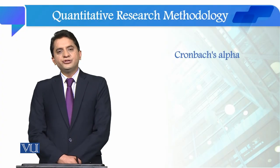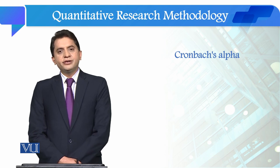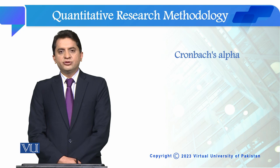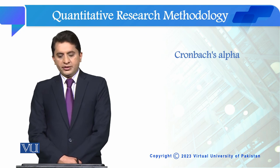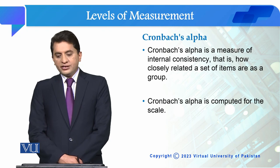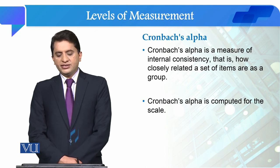Students, we will talk about inter-item consistency which we use in Quantitative Research Methodology, which is called Cronbach's Alpha. Cronbach's Alpha is a measure of internal consistency — that is, how closely related a set of items are as a group.